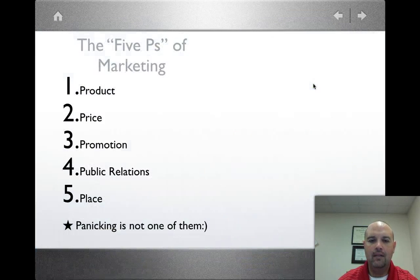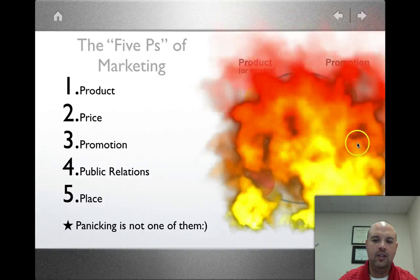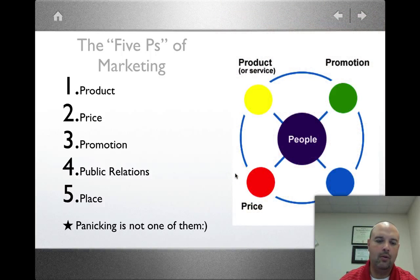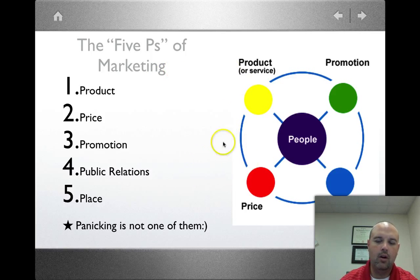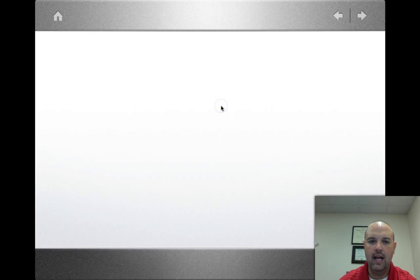The five P's — you all know this: product, price, promotion, public relations, and place. Panic is not one of them. This is marketing 101 type of stuff, so we're not going to spend a whole lot of time on it.